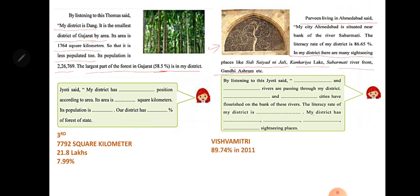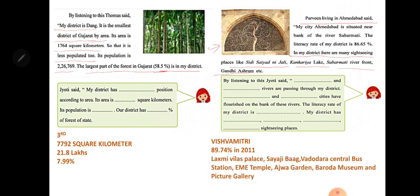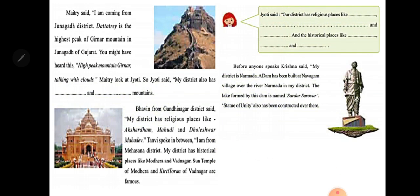The literacy rate of Vadodara district is 89.74 percent as of 2011. The district has many sightseeing places like Laxmi Vilas Palace, Sayaji Bagh, Vadodara Central Bus Station, EME Temple, Ajwa Garden, and Baroda Museum and Picture Gallery.